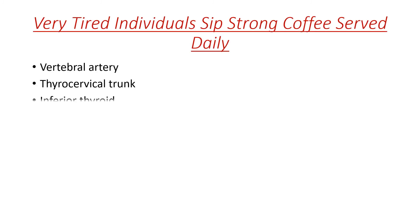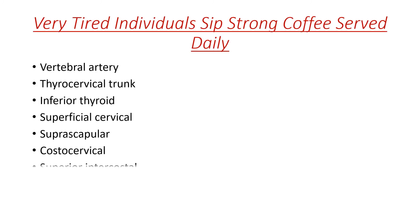The second part of the artery gives the costocervical trunk; the third part doesn't give branches. Some also use another mnemonic that includes main branches and also branches of the main branches. However, I don't use this one.